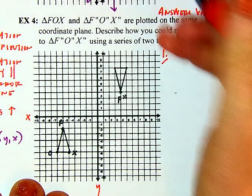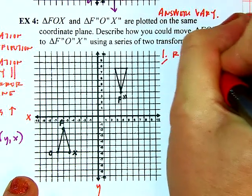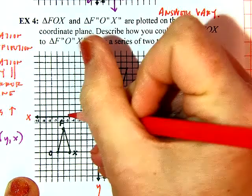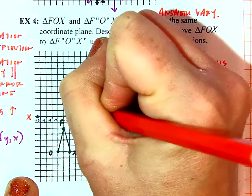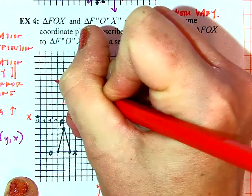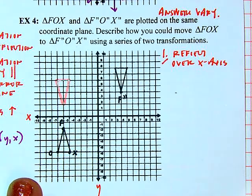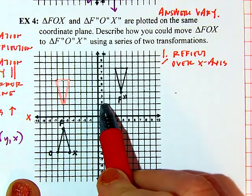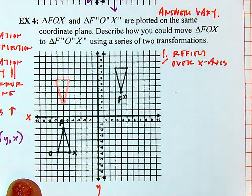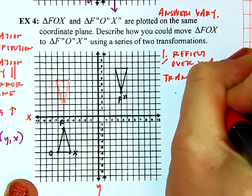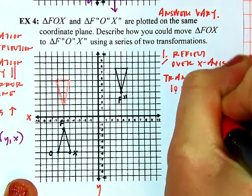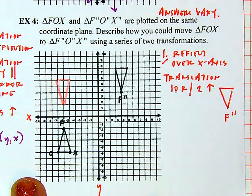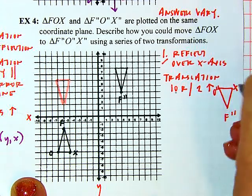Option one: let's start by reflecting over the X-axis. That puts F, O, and X into a reflected position. Then to move that into the final spot, I go ten right and two up — a translation of 10 right and 2 up. That gives F double prime, O double prime, and X double prime in their final positions.